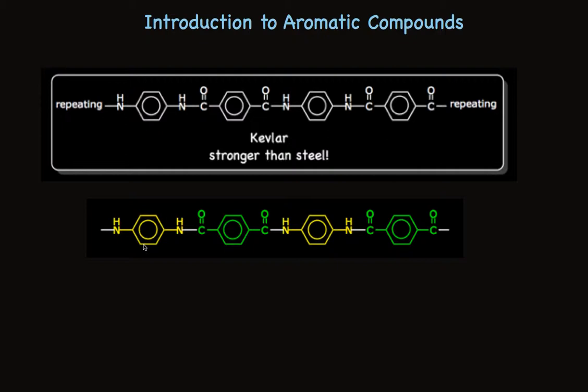This is a long chain that is made up of alternating aromatic units. The yellow aromatic rings have nitrogens attached. The green aromatic rings have carbonyls attached. And the very long chains, thousands of units long, have these alternating yellow and green components.